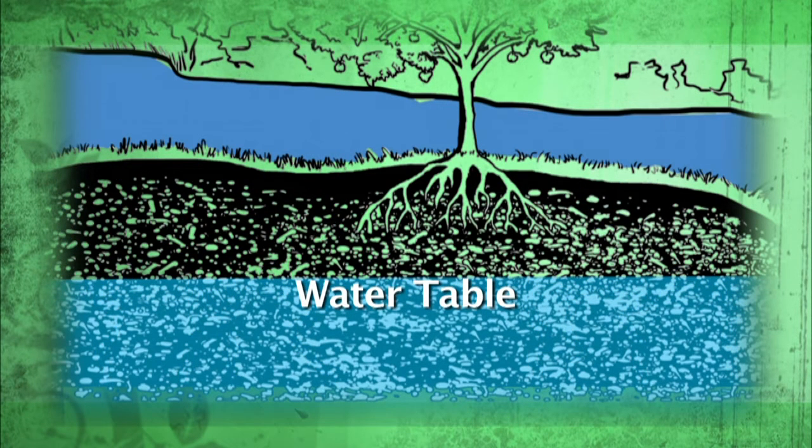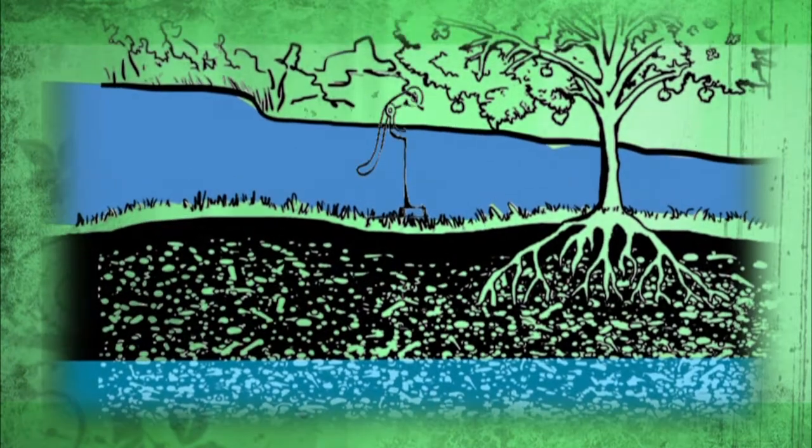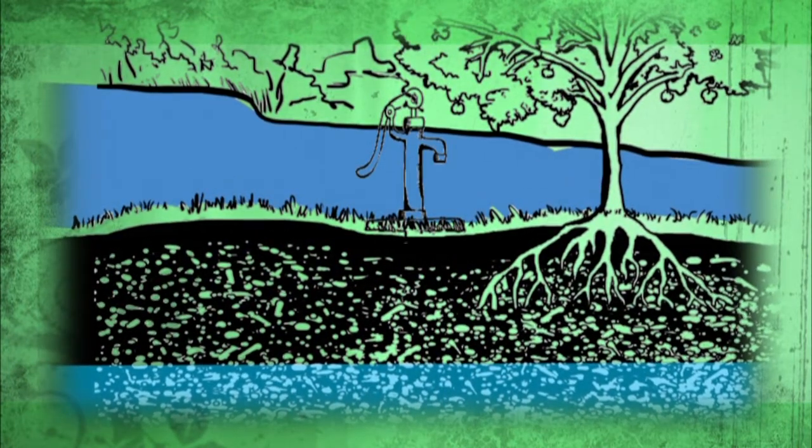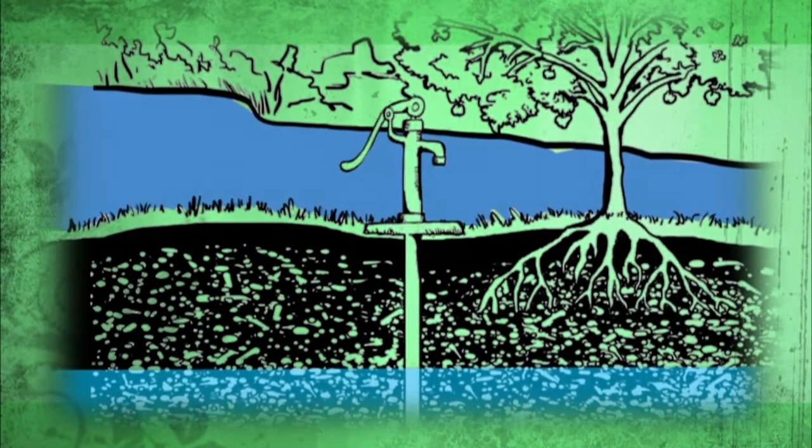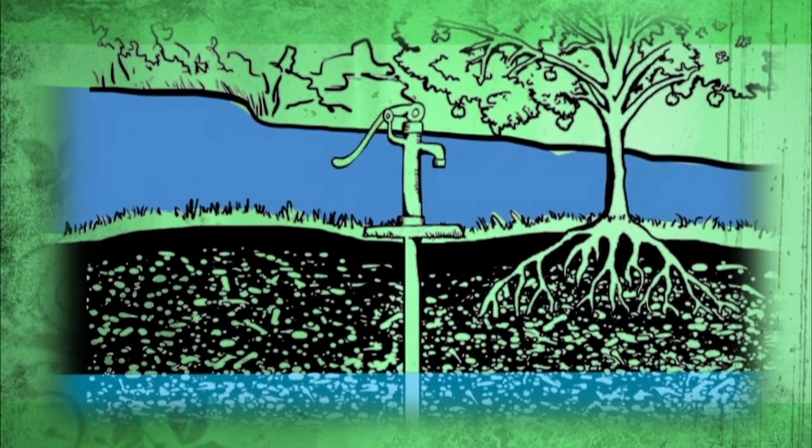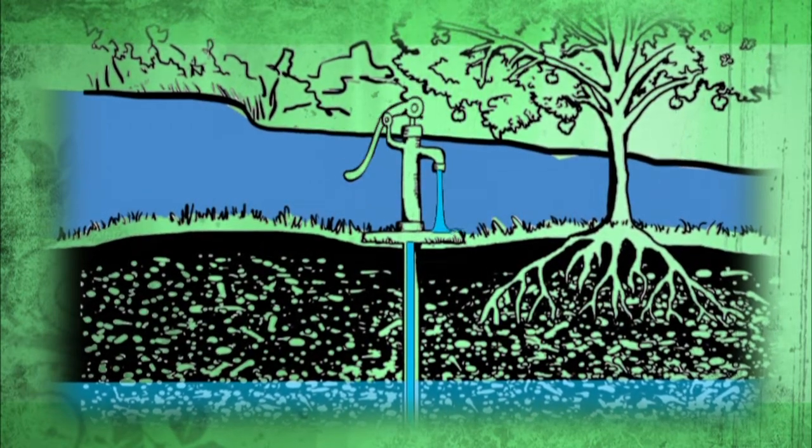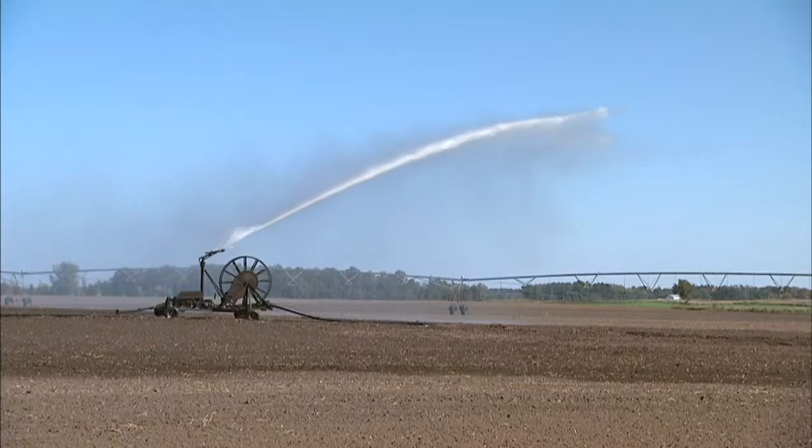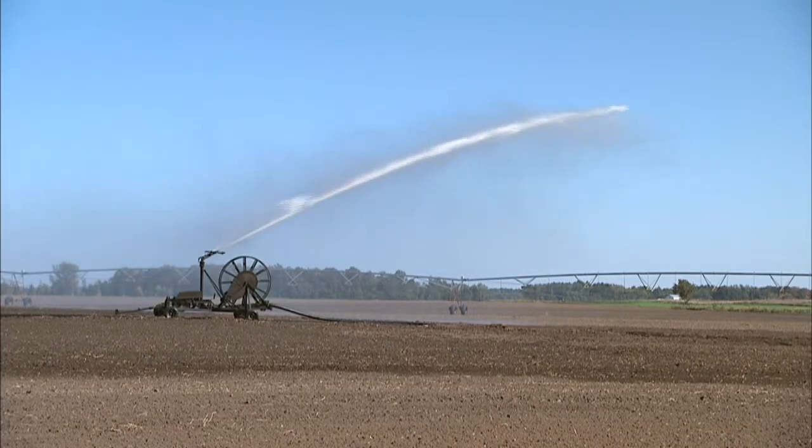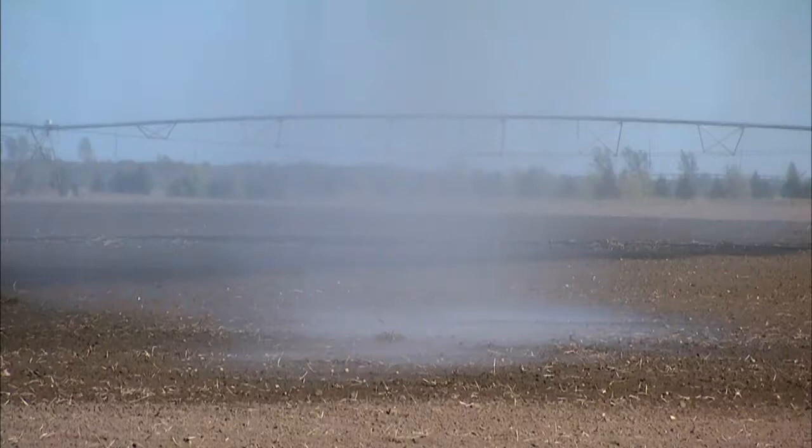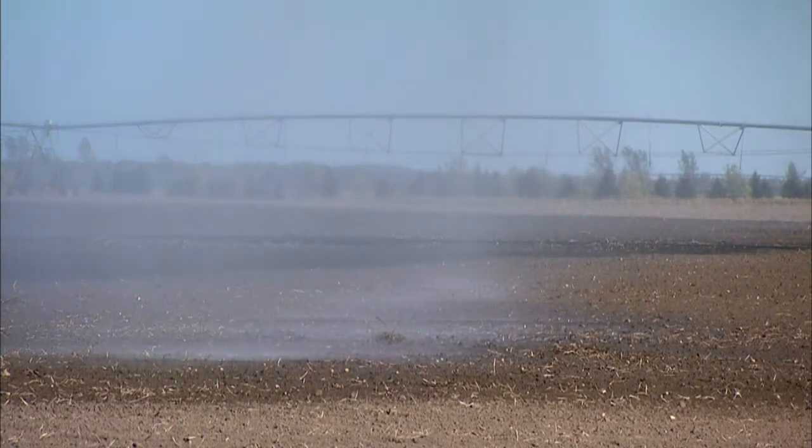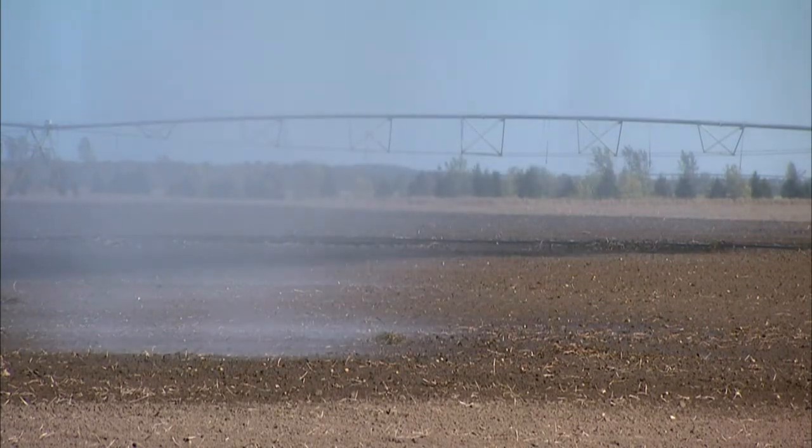Many people get their drinking water from wells drilled into the water table. The water table can return water to the surface by feeding wells, springs, creeks, rivers, and lakes. Irrigation wells using groundwater return groundwater to the surface. Once groundwater reaches the surface, it can evaporate and return to the active water cycle.